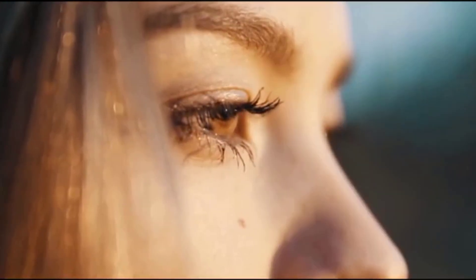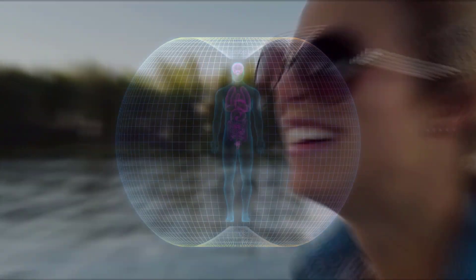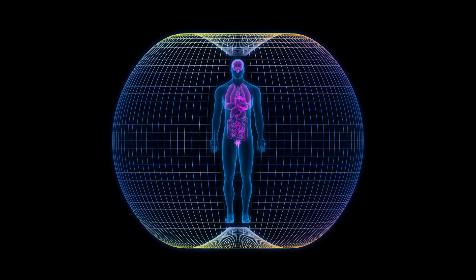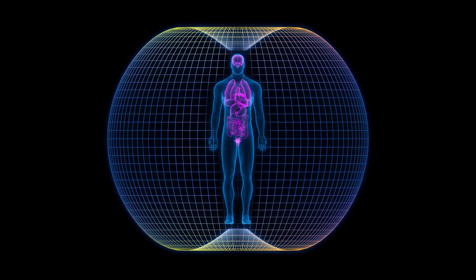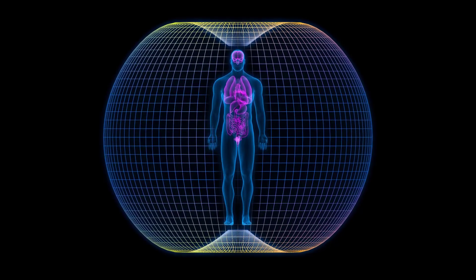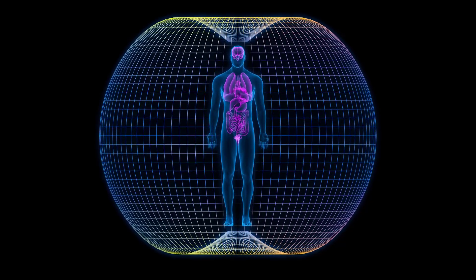Furthermore, this energy field changes in relation to your emotions. One thing you should know about electromagnetic field is that every organ and cell in your body generate an energy field. Since the heart generates the strongest electromagnetic field, the information stored in its electromagnetic field affects every organ and cell in your body.